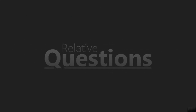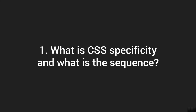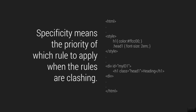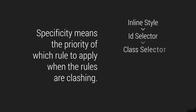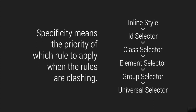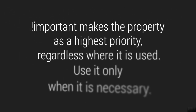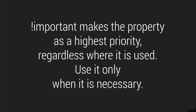So what is CSS specificity and what is the sequence? It's all about priority, especially when the rules are clashing. If they are not clashing — say in h1 you have color in element selector and font size in class selector — there is no clash, so both rules will be applied. But when there is a clash of rules, there is a priority defined by CSS — and that's what CSS specificity is. The purpose of !important is that it makes the property the highest priority regardless of where it is used, whether in a class selector or anywhere. The moment it becomes !important, it will have the highest priority — but as mentioned, not a good practice to use unless you are forced to.